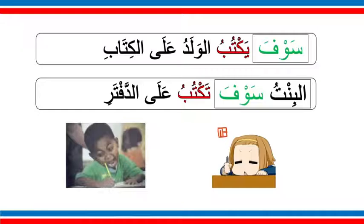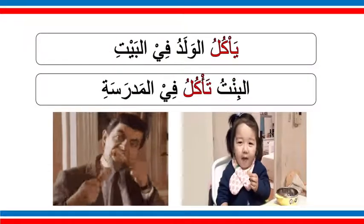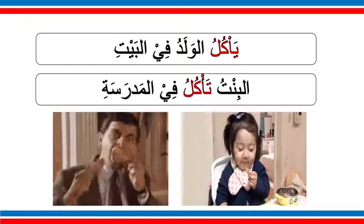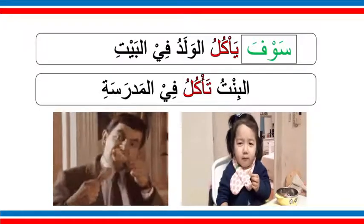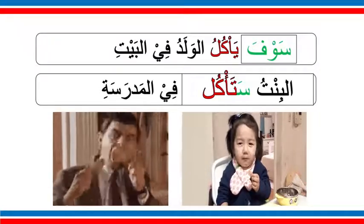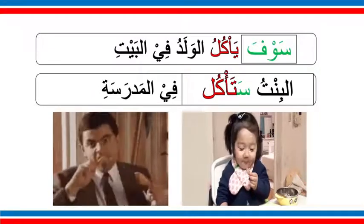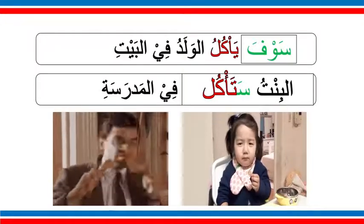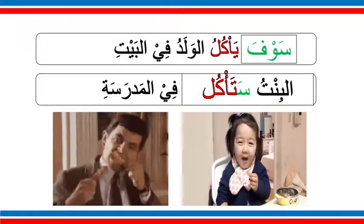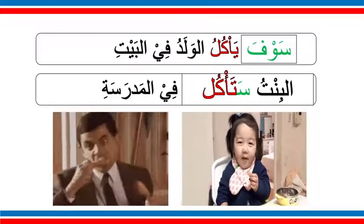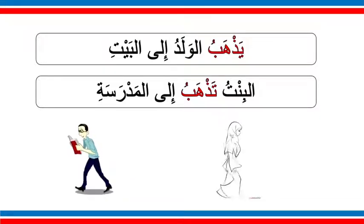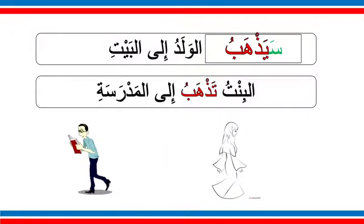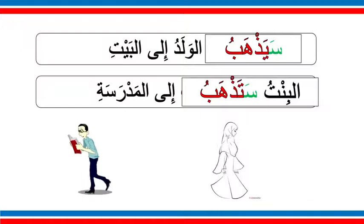Pause the video and read it out loud. يأكل الولد في البيت or البنت تأكل في المدرسة. For the first one: سوف يأكل الولد في البيت. For the second: البنت ستأكل في المدرسة — we put سا before the verb and connect it, making ستأكل. If we use سوف: البنت سوف تأكل في المدرسة. Similarly: سيأكل الولد في البيت. Next: يذهب الولد إلى البيت or البنت تذهب إلى المدرسة. With سا: سيذهب الولد إلى البيت, or البنت ستذهب إلى المدرسة.